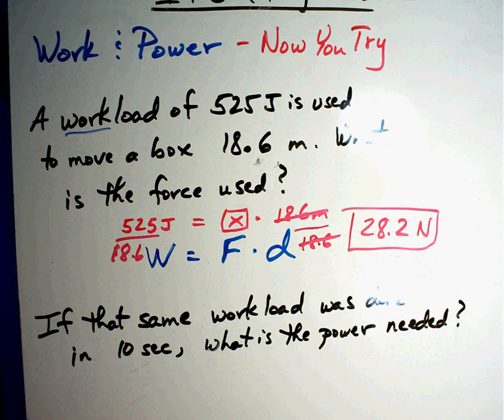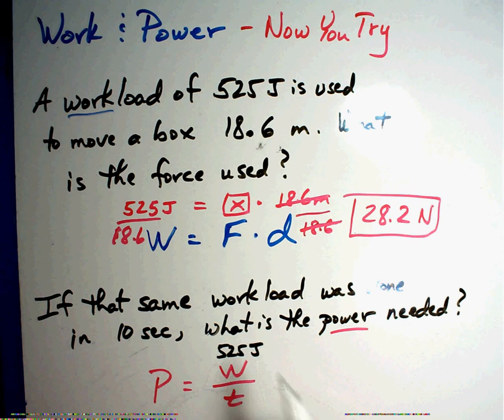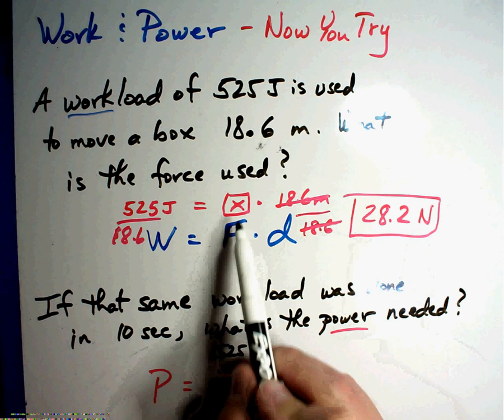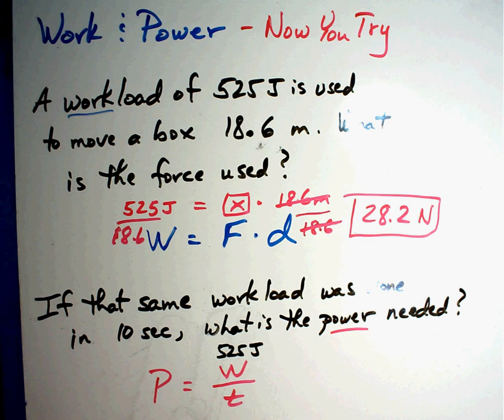Now the bottom question is related to it. If that same workload was done in 10 seconds, what is the power? Power. Okay, there's my magic word. Power equals work divided by time. Alright, so the same workload. The workload was 525 joules. It's not that answer right there because that was force. Workload was 525 joules. It says the same workload, 525 joules, was done in 10 seconds.